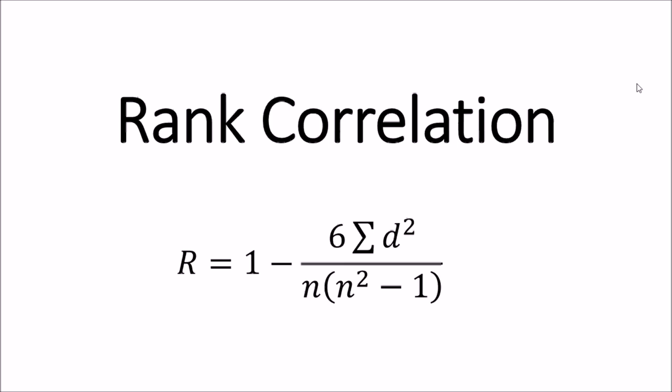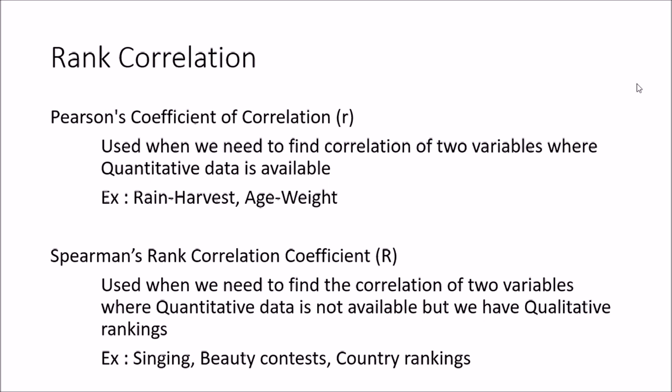We previously talked about the Pearson's coefficient of correlation, R. We use Pearson's coefficient of correlation when we have quantitative data — numerical values we can use to find the relationship between two variables. For example, rain and harvest, or height and weight, where we know the numerical quantity of each variable.